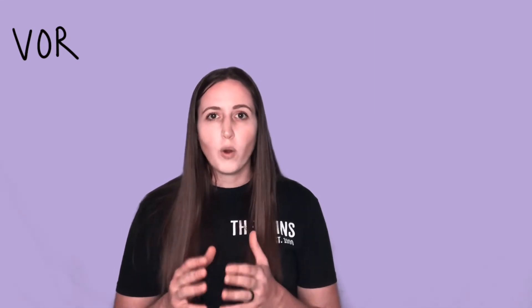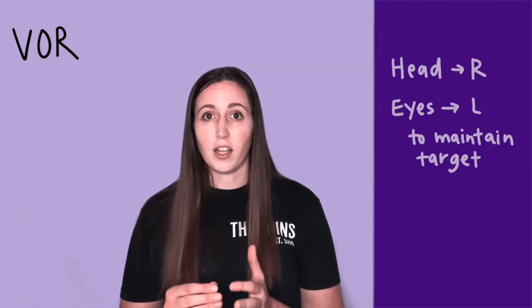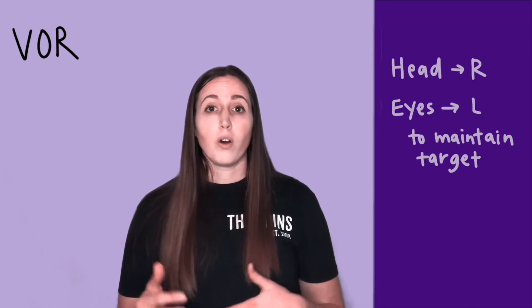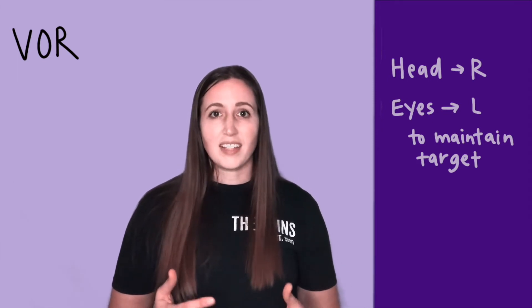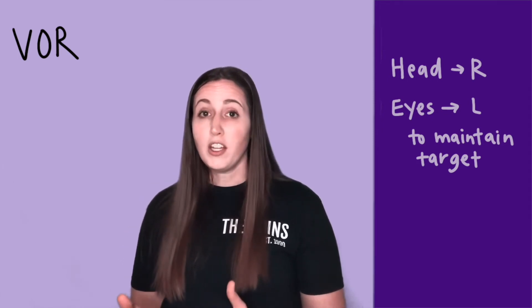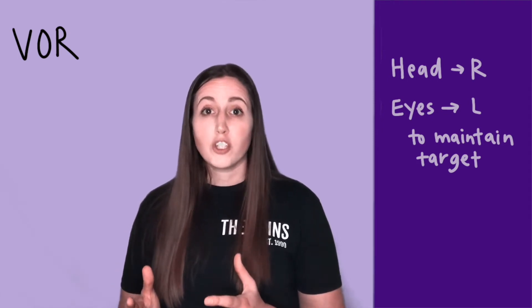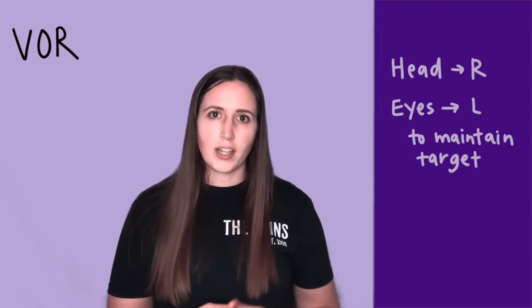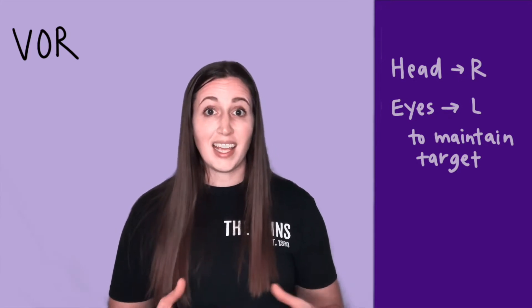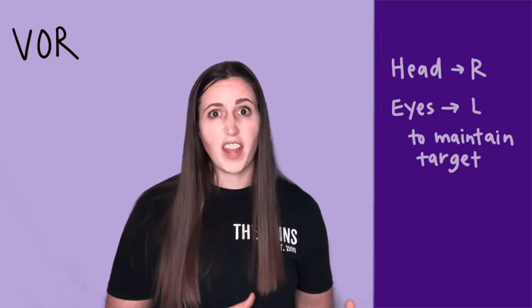The vestibulo-ocular reflex is when your eyes focus on a target as your head is turning. As your head turns right, your eyes turn equally in the opposite direction to maintain gaze fixation on that target. This can occur in the vertical direction as well, and it's really important for both stability and gaze fixation.